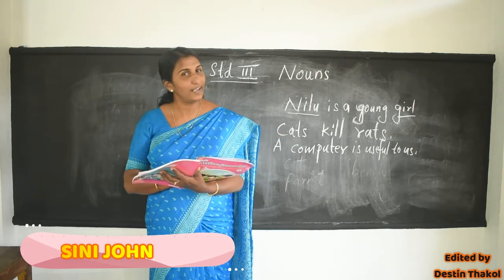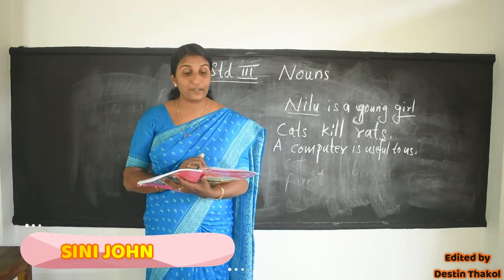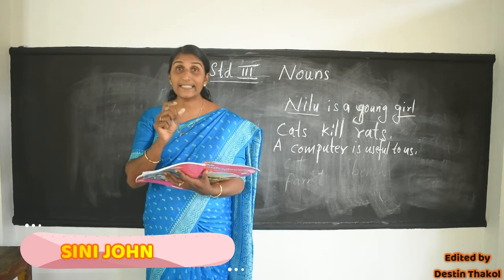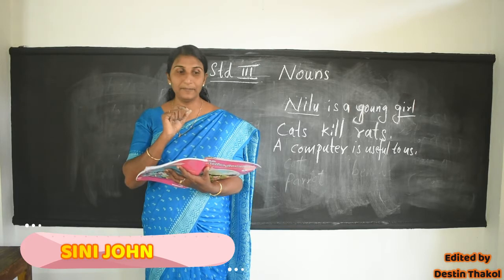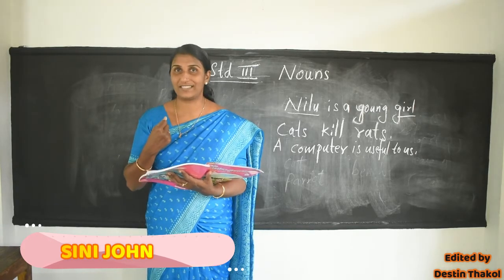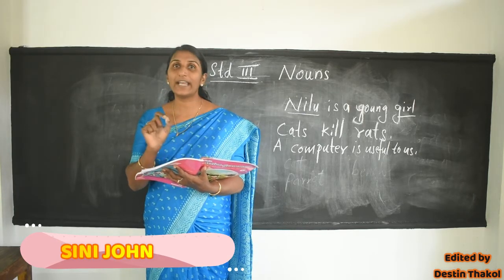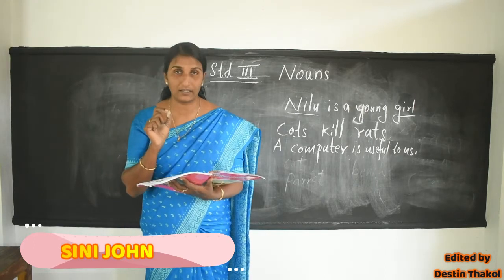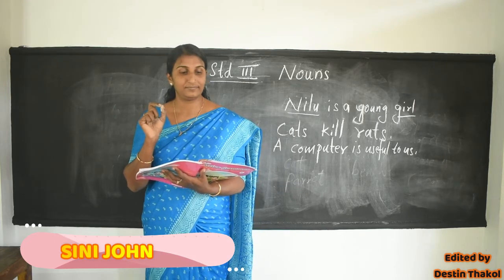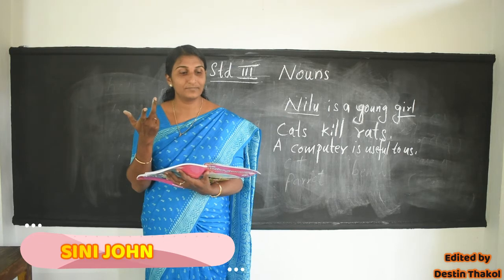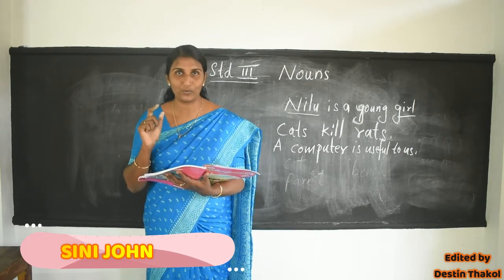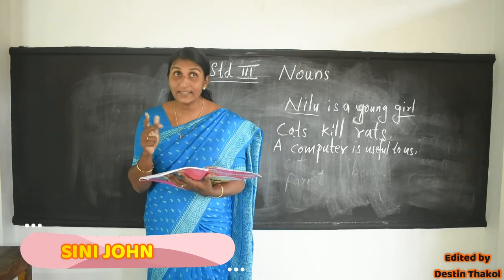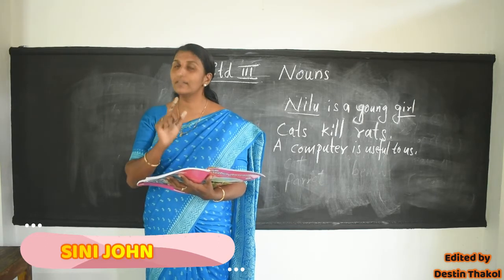Exercise number B: pick out the nouns from the following sentences and write them below. Seven sentences are given there. Take each sentence and pick out the nouns, then write them in the blank space. First one: the moon goes around the earth. How many nouns are there? Moon is a noun. Goes is not a noun. Round is not a noun. Earth is another noun. So moon and earth — in this way you can do that exercise.